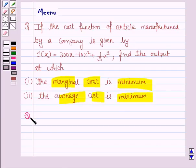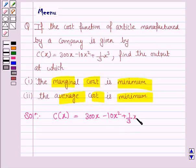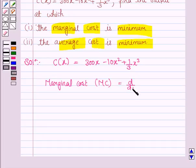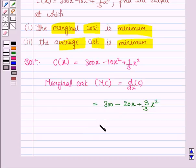Let's now move on to the solution. The cost function C(x) is given as 300x minus 10x squared plus 1/3 x cubed. Marginal cost MC is d/dx of C. So d/dx of C is 300 minus 20x plus 3/3 x squared, which simplifies to 300 minus 20x plus x squared.